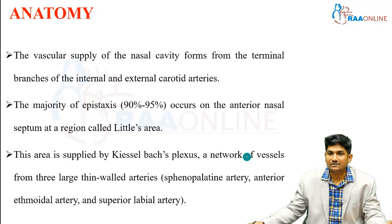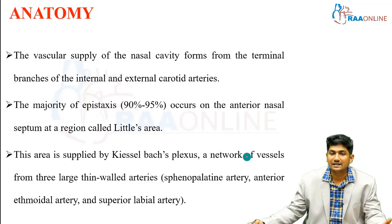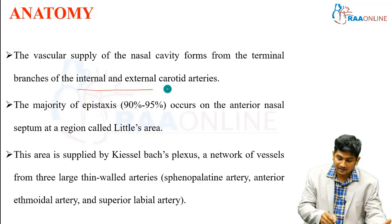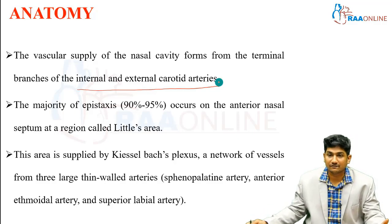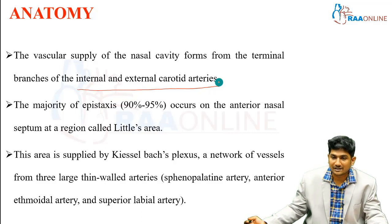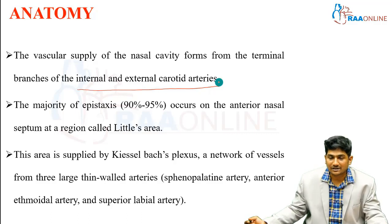Coming to the basic anatomy: the vascular supply of the nasal cavity forms from terminal branches of two high-pressure systems — the internal and external carotid arteries. That is why epistaxis becomes very important, because these two high-pressure systems get anastomosed at one of their terminal areas, the nasal cavity, and from there if a bleed occurs it is going to be very significant.